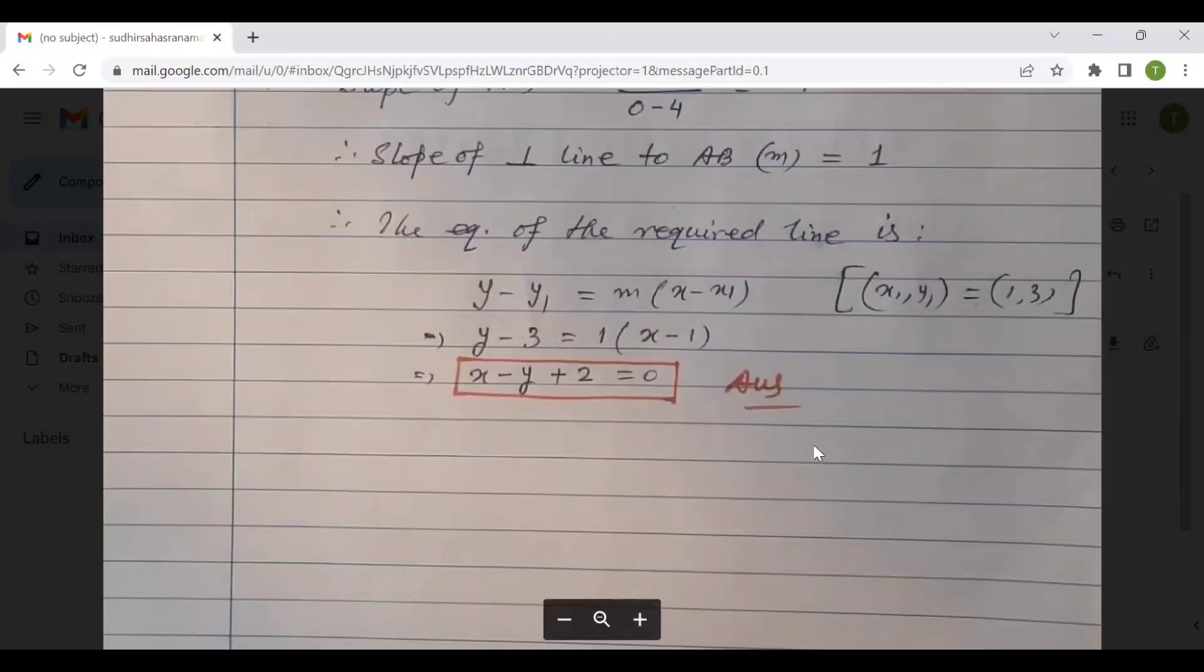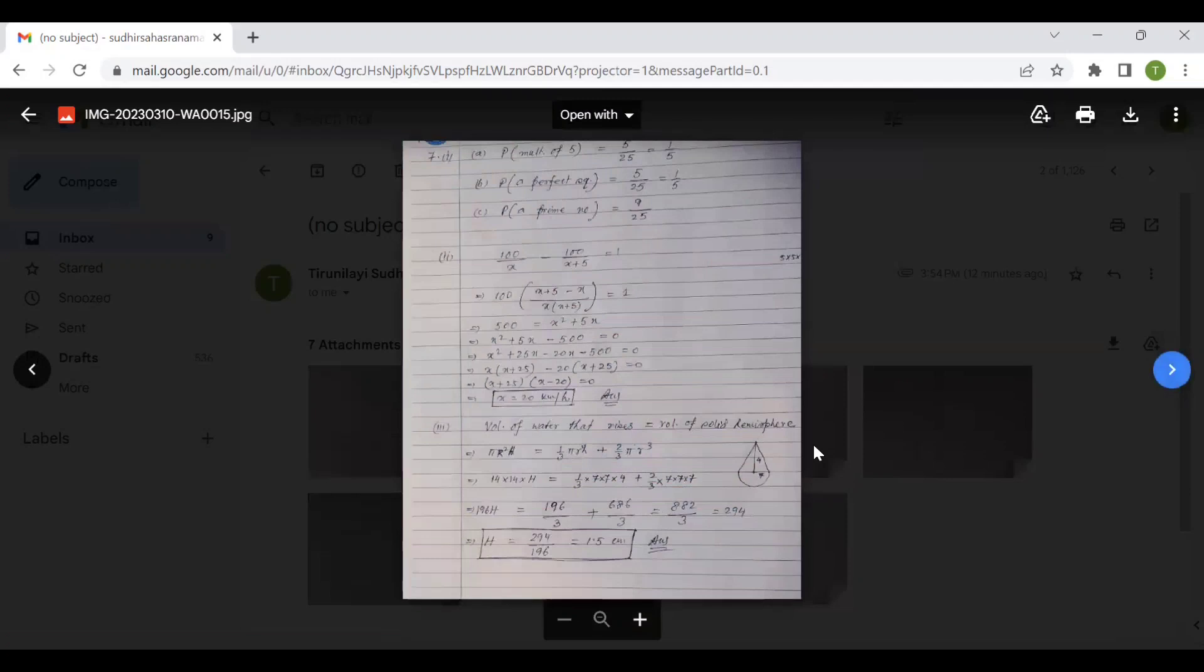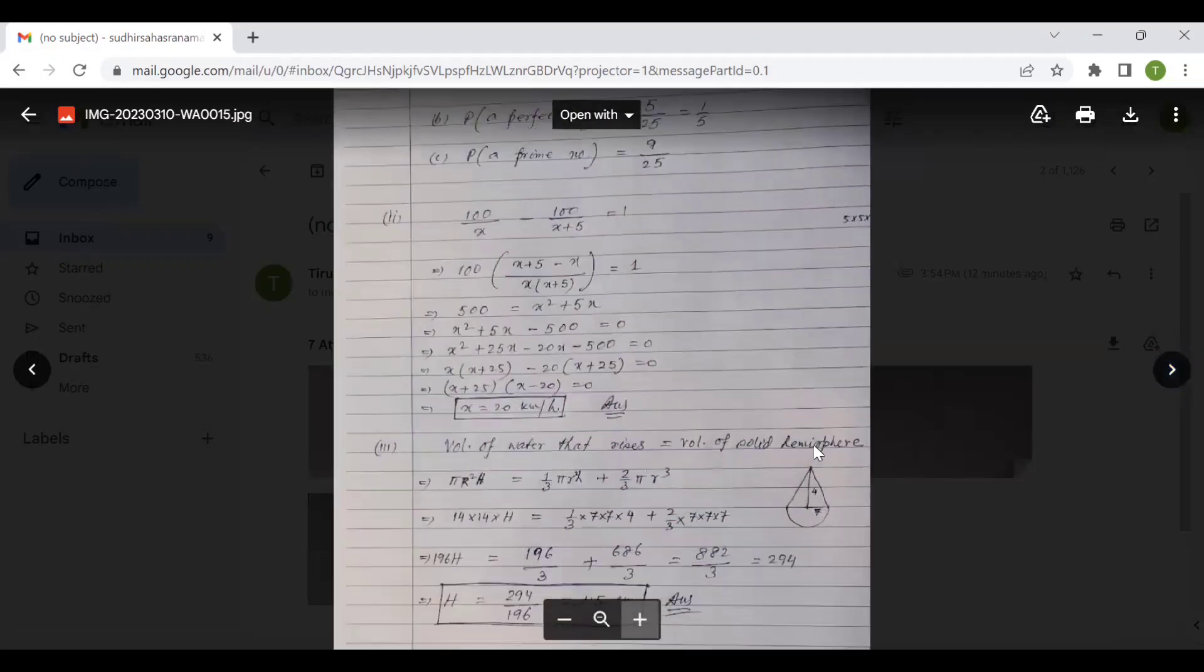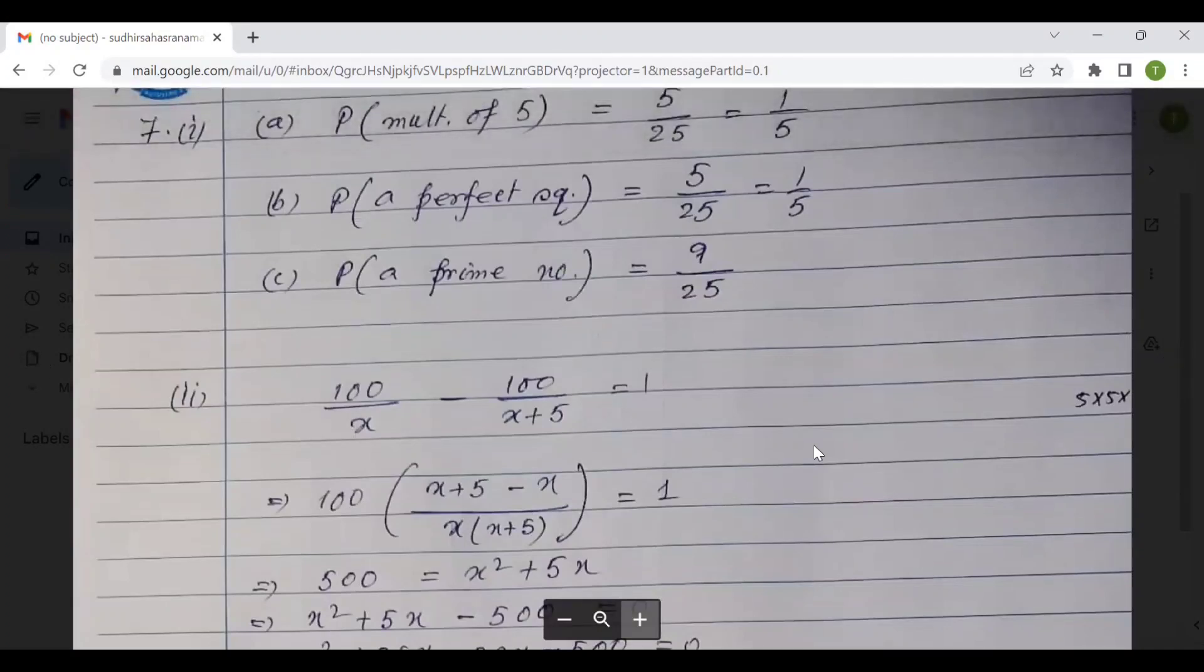This is the sixth question part three. He has worked out the entire solution. Answer has been given in a box at the end. This is as far as question number six is concerned. Let us now move to question number seven. This is the seventh part, the first part. Five by twenty-five equals to one by five.